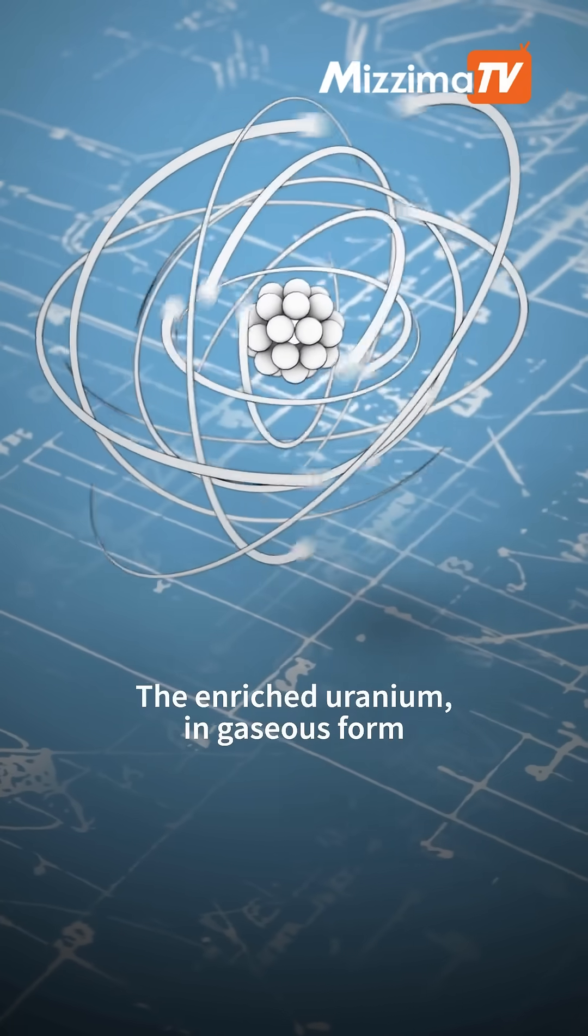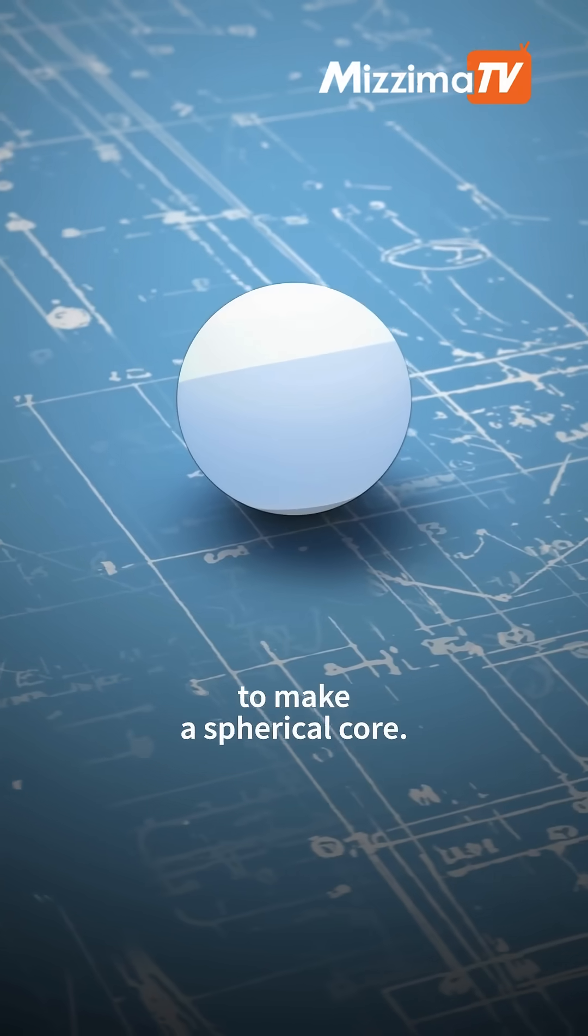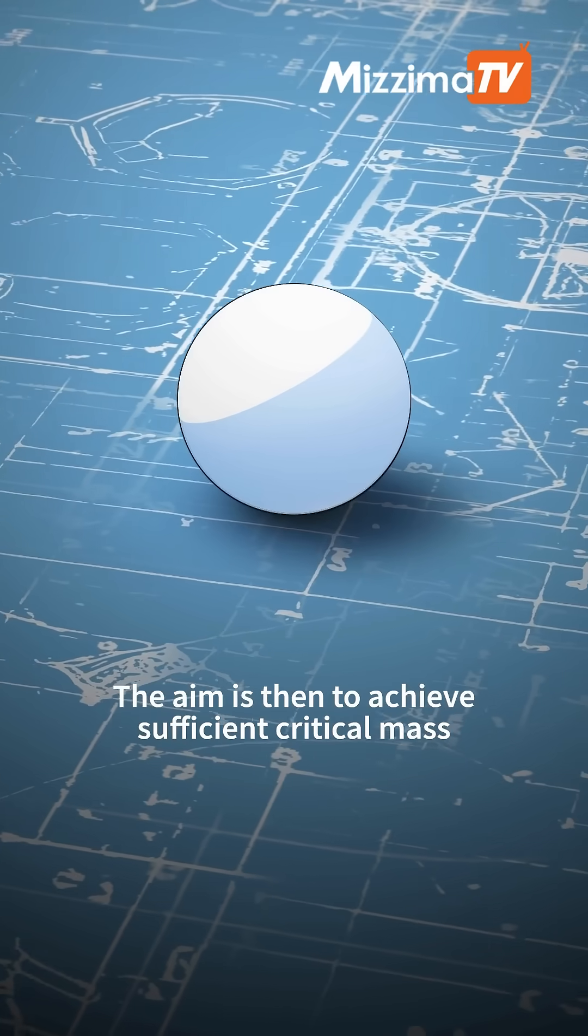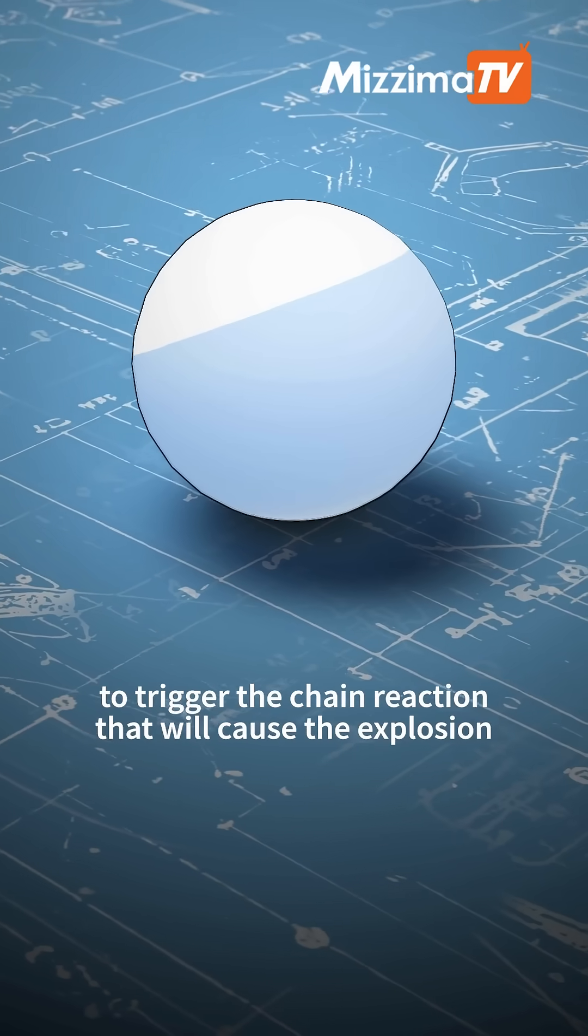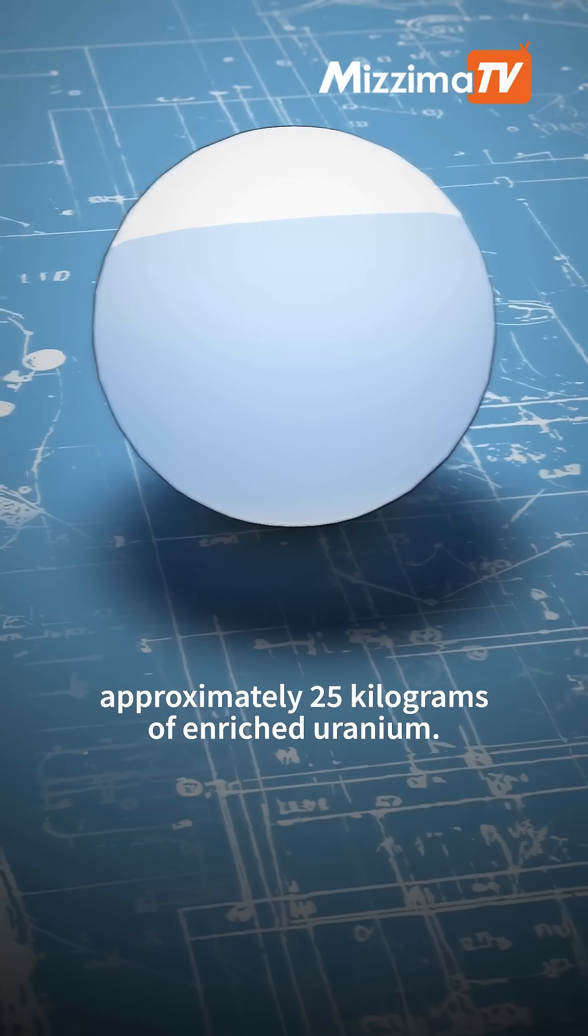The enriched uranium in gaseous form must be transformed into a metal to make a spherical core. The aim is then to achieve sufficient critical mass to trigger the chain reaction that will cause the explosion, approximately 25 kilograms of enriched uranium.